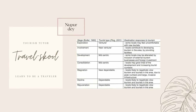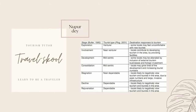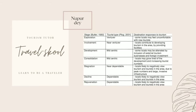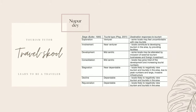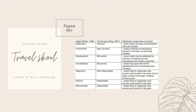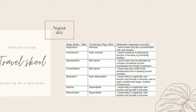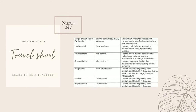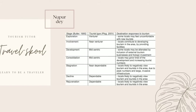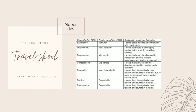In the involvement stage, the tourist type is 'near venturer' — locals begin contributing to tourism by providing facilities like homestays and see it as a source of income. In the development stage, the tourist type is 'mid-centric' and locals may be alienated by external tourism businesses and foreign investment coming into the destination.